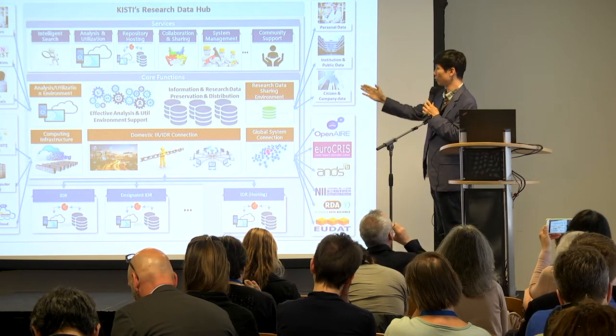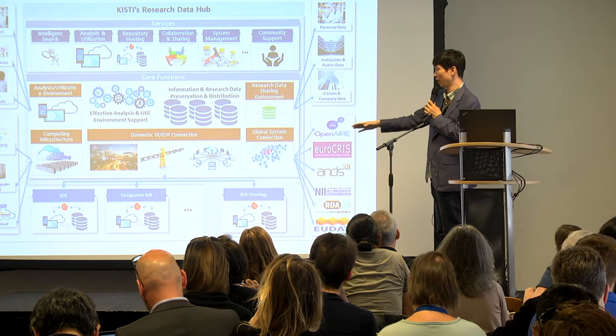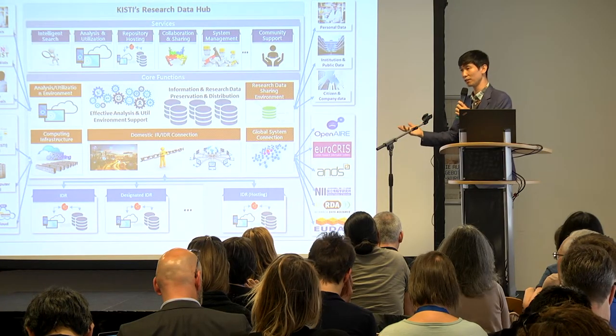In addition to these core functions, we also provide domestic IR and IDR connection functions, and global system connections with, for example, OpenAIRE. Our Research Data Hub integrates other IDRs, designated IDRs, and other IR repositories using IR hubs. Two hub systems are located at KISTI, and we will provide an integrated hub system for both IR and IDR.